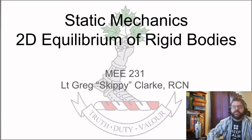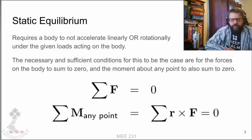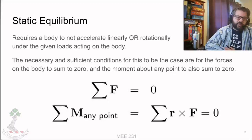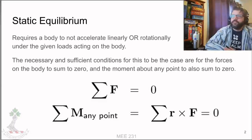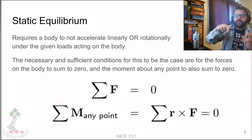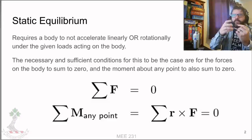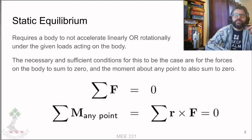We're starting with the 2D equilibrium of rigid bodies. If we want a rigid body to not be moving, or to be maintained at the constant velocity it's already at, it needs to not be accelerating linearly or rotationally. So it can't be moving up and down, and also can't start spinning out of control. Even if it's staying in the same spot, spinning out of control is still definitely not static equilibrium.